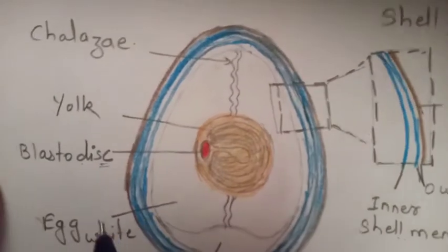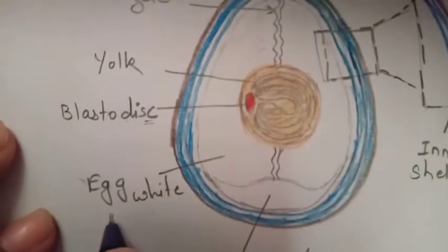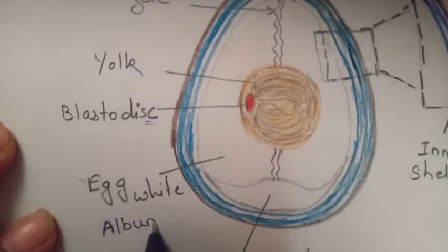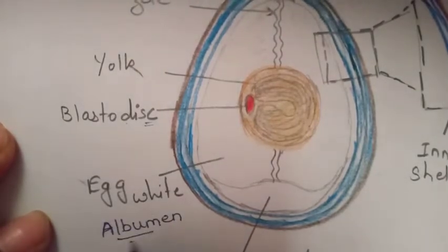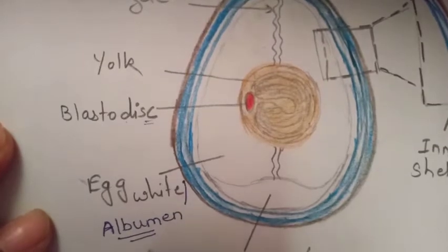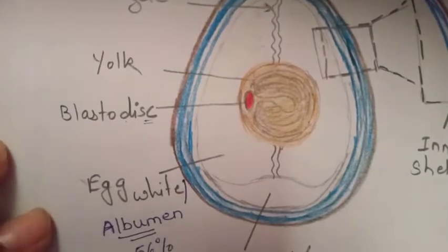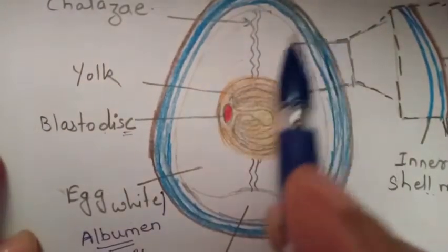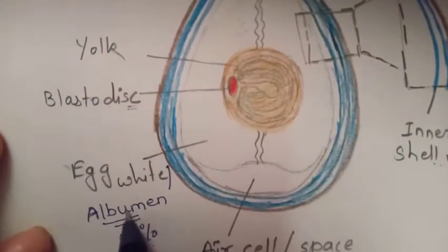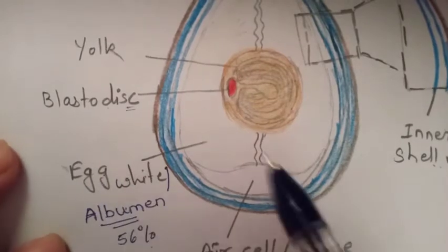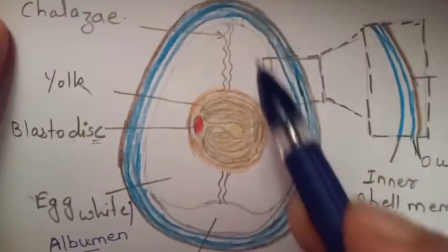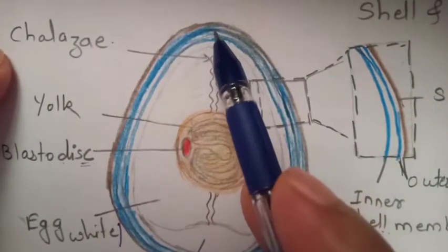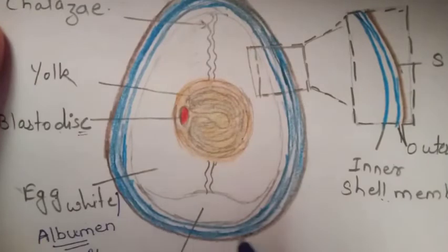Egg white is nothing but albumin. Egg white, or albumin, makes up 56 percent of the total egg. Looking at its structure, there is a narrow portion and a broader portion.